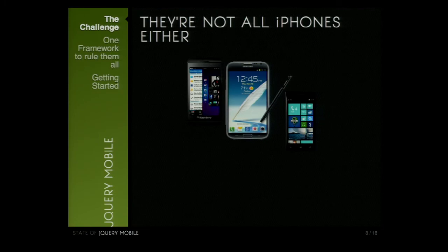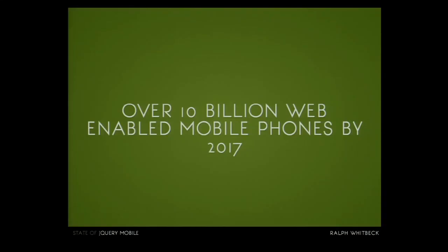A lot of phones are out there, and they're not all iPhones. Blackberry came out with a great phone, the Z10. Samsung and Android have some great phones — the Note 2. I went to Korea last year and everybody had those things. The Windows Phone is becoming popular as well. So you've got to think outside of just the iPhone. You've got to think of all the devices. In 2017, over 10 billion mobile web devices are going to be out there, so we really need to consider mobile as we go forward.